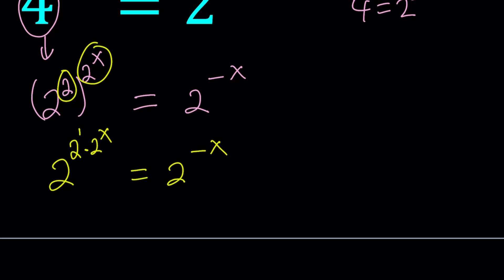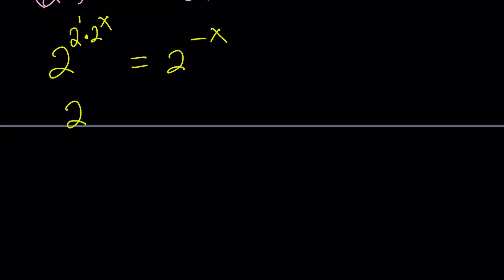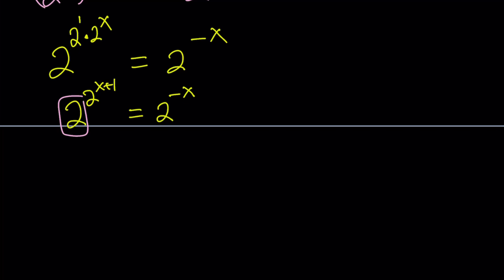And then, this 2 is considered 2 to the first power. To multiply 2 powers, we have to add the exponents, because they have the same base. So we can write this as 2 to the power 2 to the power x plus 1 equals 2 to the power negative x. Even though the left-hand side looks somewhat complicated, don't worry, because we have the same base. So we can totally focus on the exponents.